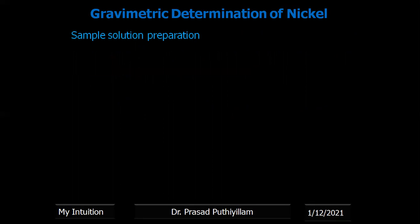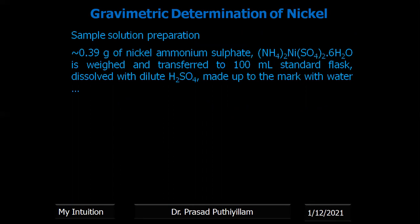For sample solution preparation, approximately 0.39 gram of nickel ammonium sulfate is weighed and transferred to a 100 mL standard flask and dissolved with dilute sulfuric acid,